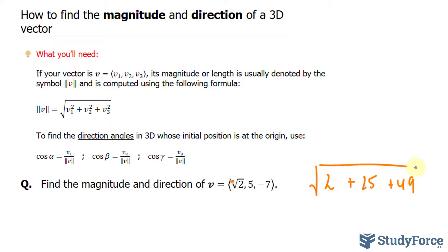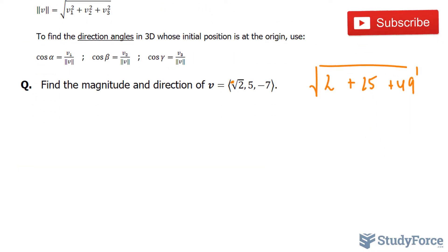We'll take the square root. 2 plus 25 is 27, plus 49 is 76. So we have the square root of 76 represents the magnitude of our vector.